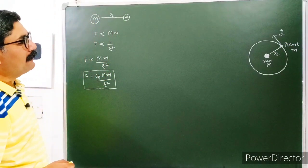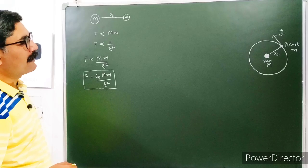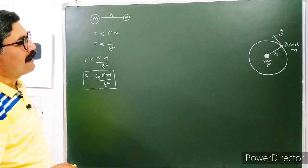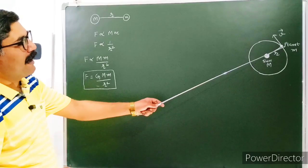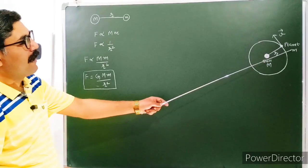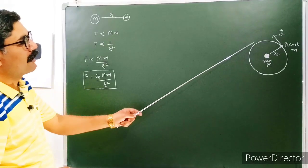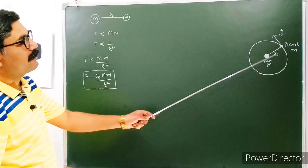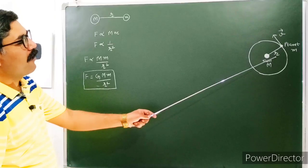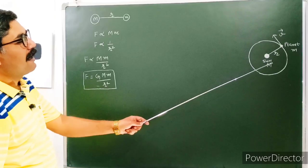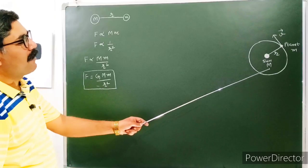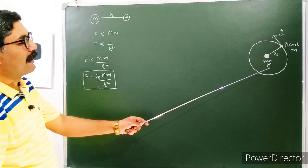Now, what does this figure represent? This figure is representing a planet having mass m revolving around the sun in a circular orbit of radius r. Let M be the mass of the sun.